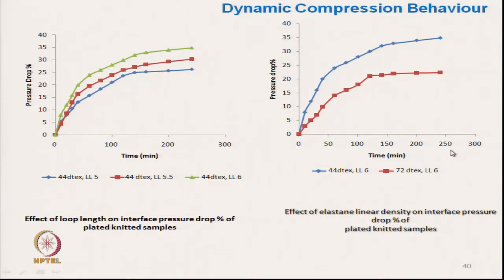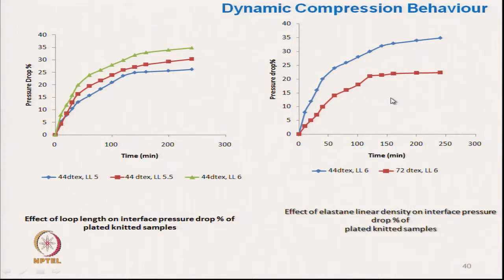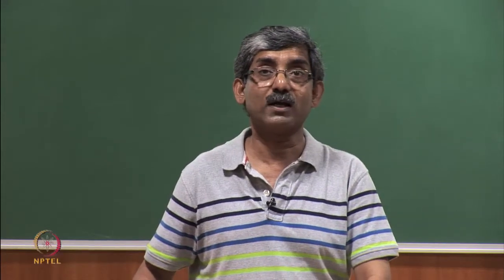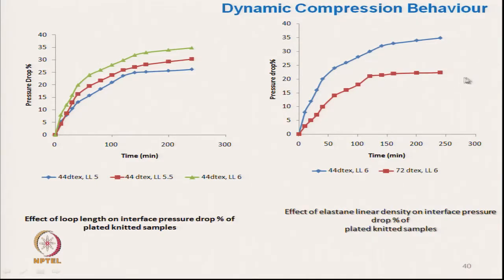Similarly, another study examined the effect of elastane linear density. Elastane fibre was used — the blue fabric used 44 decitex elastane and the red one used 72 decitex, a coarser elastane. To maintain the required pressure in the garment, one should use coarser elastane, as coarser elastane will have less pressure drop.